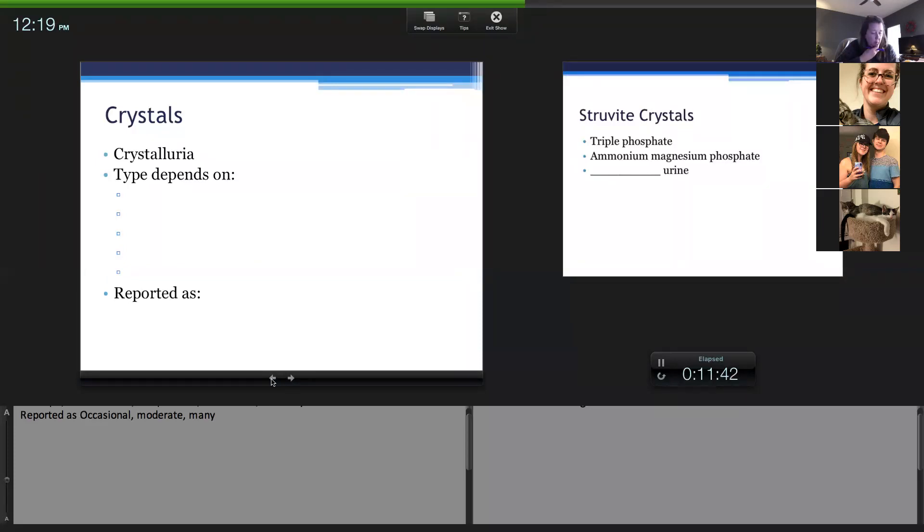Normal urine collected by cystocentesis is considered sterile. You do your best, you clean it, but that is going to be your most sterile, most clean type of sample collection. That's preferred if you're going to do a culture.